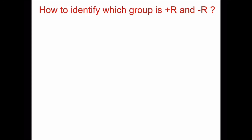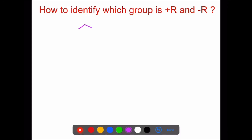How to identify which group is plus R and which group is minus R. This is benzene — benzene is not in the first atom layer. This is the lone pair. A negative charge is a group of plus R.